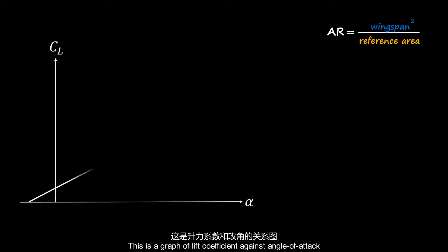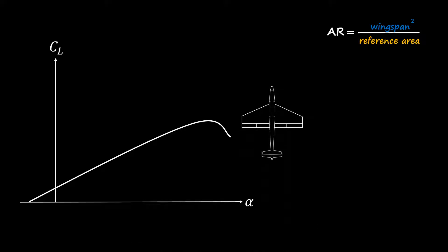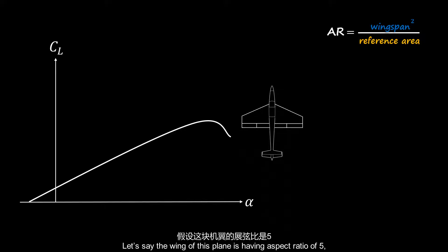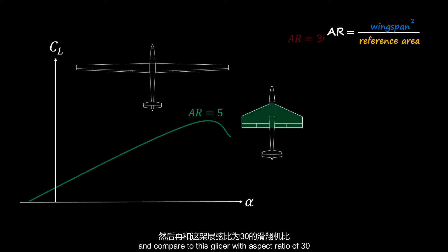This is a graph of lift coefficient against angle of attack. The shape of the wing can affect the lift performance. Let's say the wing of this plane has an aspect ratio of 5, compared to this glider with an aspect ratio of 30.